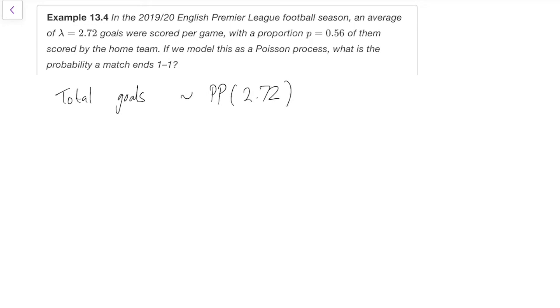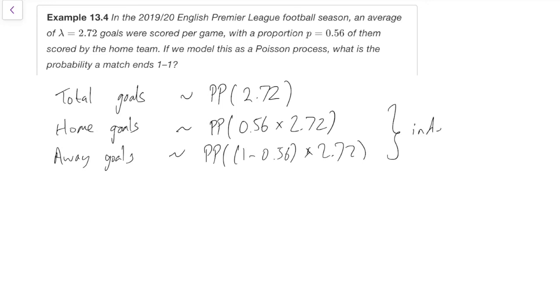But when a goal happens, we can think of labelling it by whether it's a home team goal or an away team goal. That is, we're marking it. Probability p equals 0.56 of them were scored by the home team. So we can think that we mark each goal as being from the home team with probability 0.56. That means the home goals, they'll be the ones that are marked, will be a Poisson process with rate 0.56 times 2.72. And the away goals will be the other one. That will be a Poisson process with rate (1-0.56) times 2.72. And further, those are independent. That's p lambda (1-p) lambda independent.